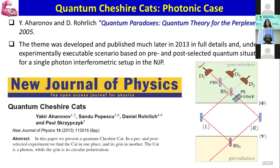The phenomenon of the Cheshire Cat was first given by Aharonov and Rohrlich in a book, Quantum Paradoxes: Quantum Theory for the Perplexed, published in 2005. But the actual paper — where the full detail of the Quantum Cheshire Cat is given — was published in 2013. This paper was published in New Journal of Physics in 2013.